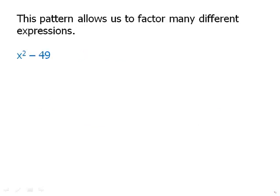This pattern allows us to factor many different expressions. For example, starting with x squared minus 49: a would be x, because x squared equals x squared, and b would be 7, because 7 squared is 49. So this factors into x plus 7 times x minus 7.